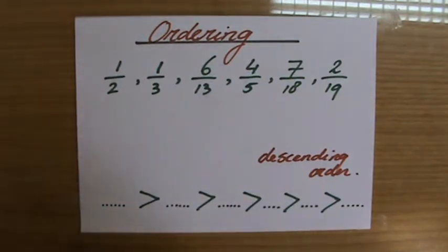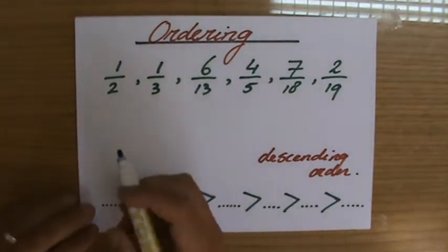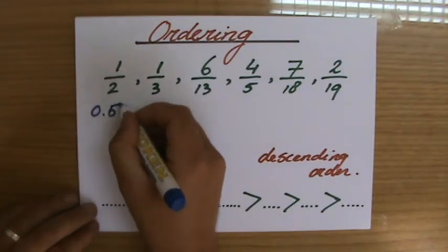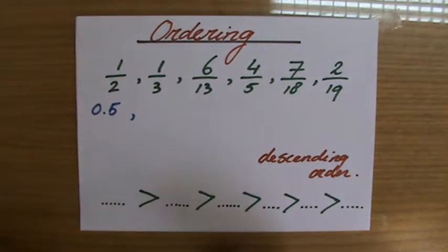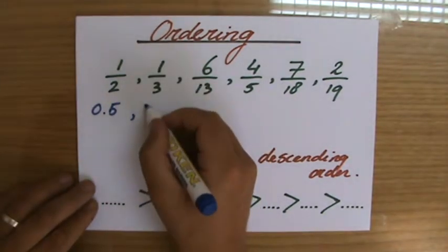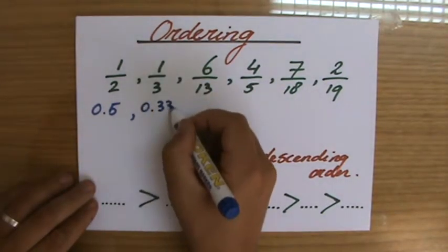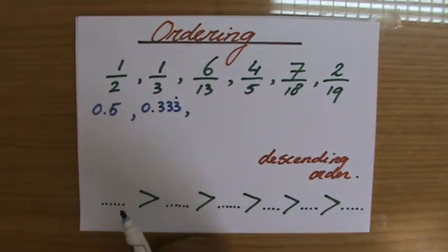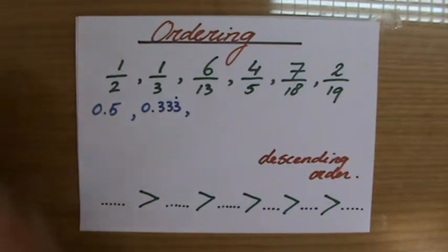1/2, that's 0.5. If you don't know that, one divided by two in your calculator. 1/3, that's 0.333 and that goes on with many more threes. 6/13, let's grab my calculator.